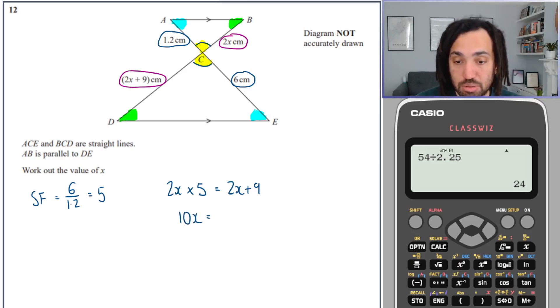So 10x equals 2x plus 9. Subtract 2x from both sides and then divide through by 8. So x is equal to 9 over 8. Lovely.